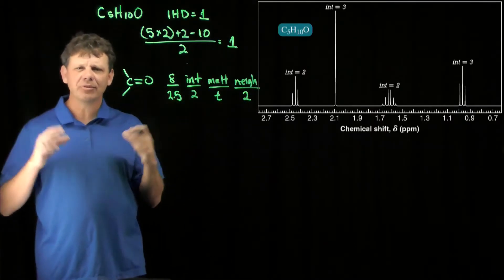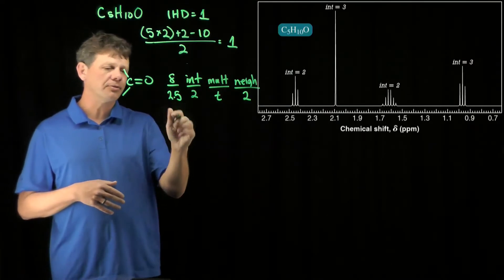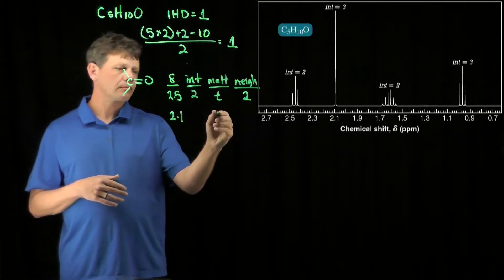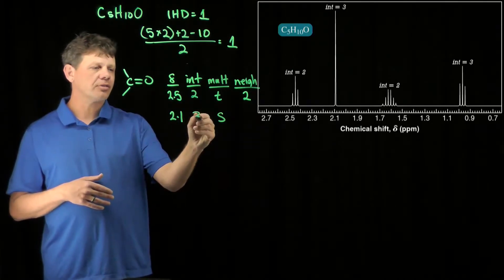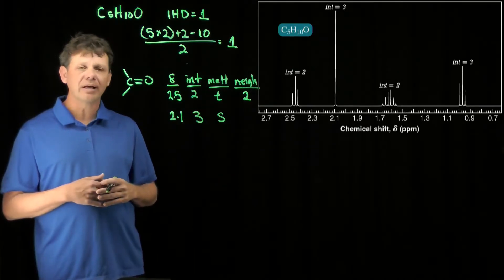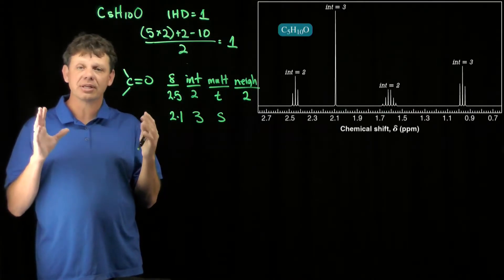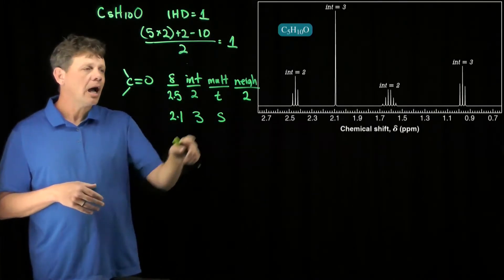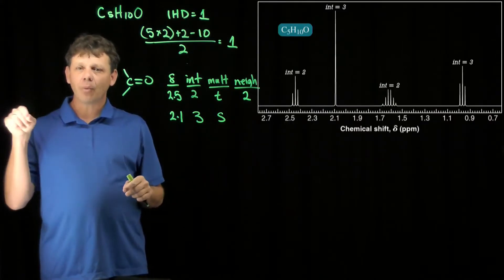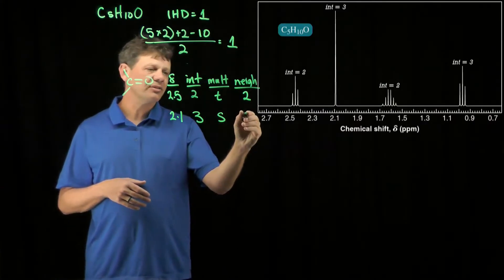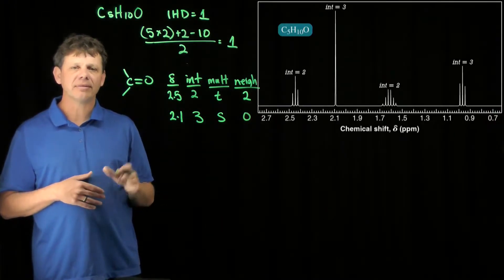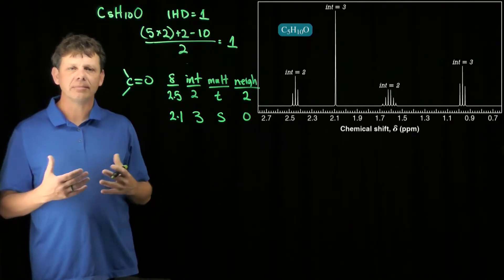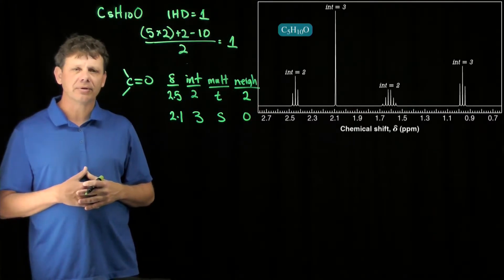Let's continue laying out the pieces of our puzzle. At 2.1, we have a singlet that integrates to 3, so there are three hydrogens that make up that signal. Multiplicity of being a singlet minus one means that there are zero neighbors. So those three hydrogens have no neighbors next to them. The signal, these three hydrogens, are next door directly to no hydrogens. That's going to be important for figuring out the structure.